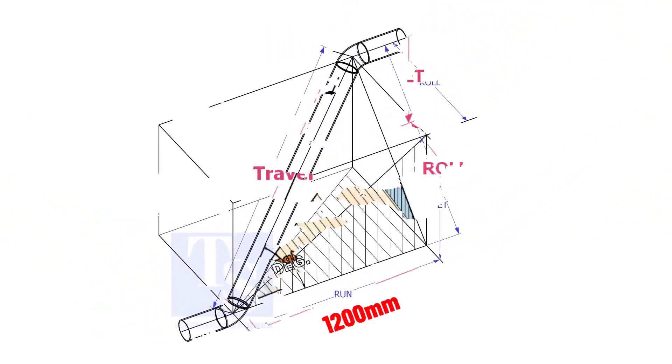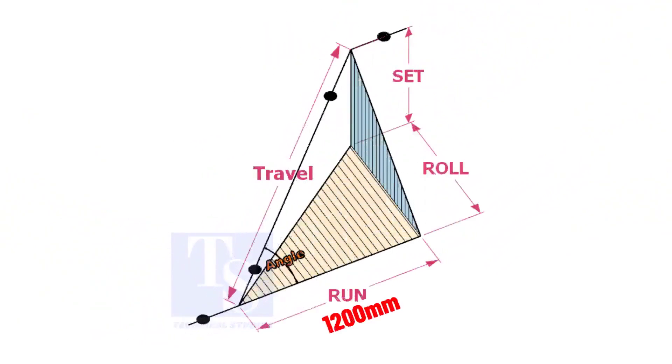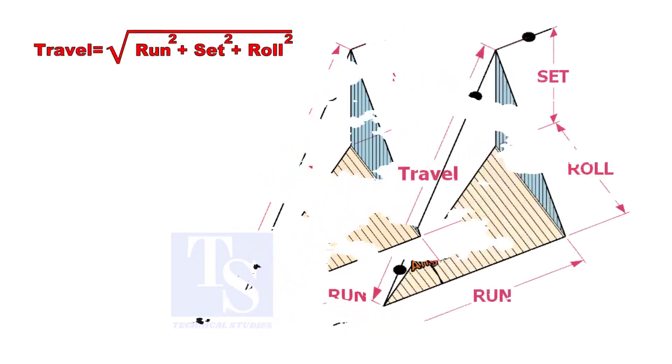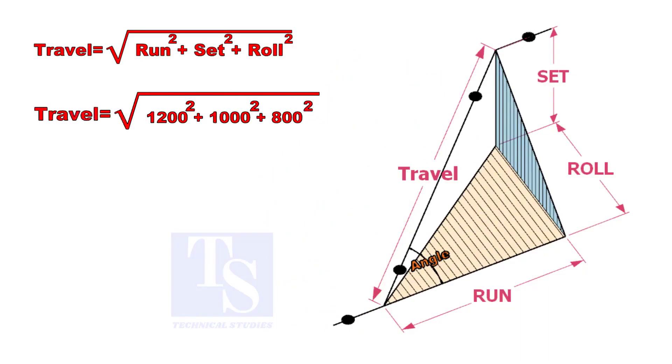Assume that the run is 1200 mm, set is 1000 mm, and the roll is 800 mm. Calculate the travel length. Let us calculate.